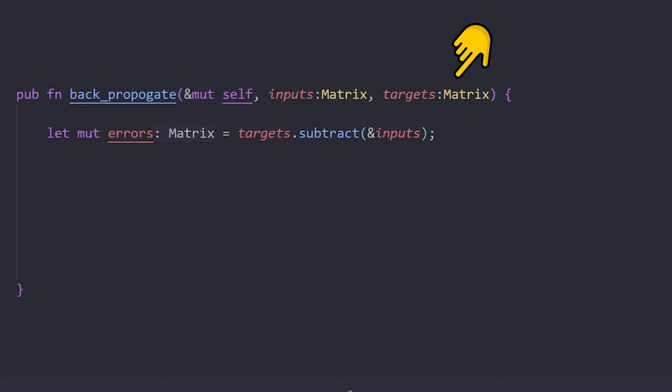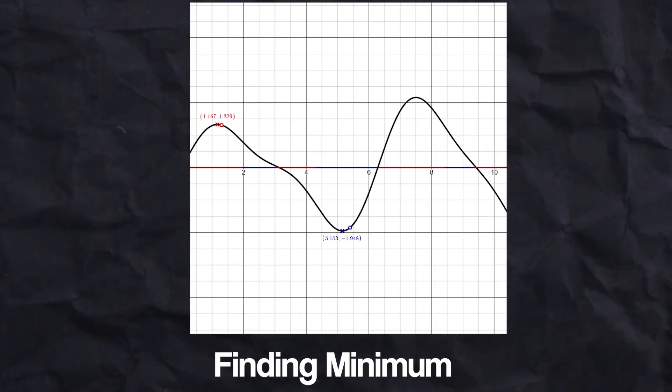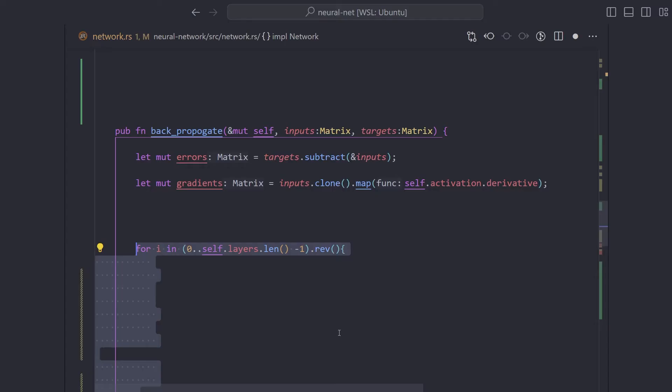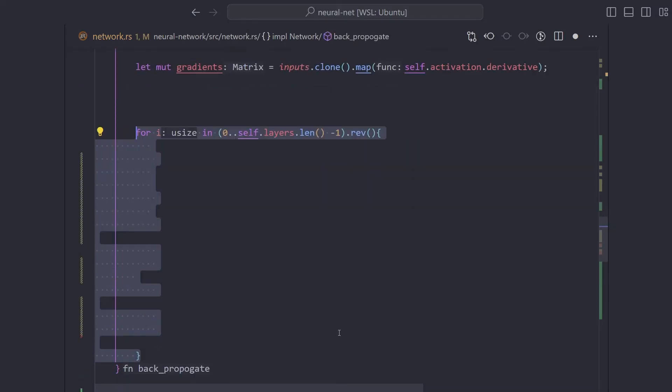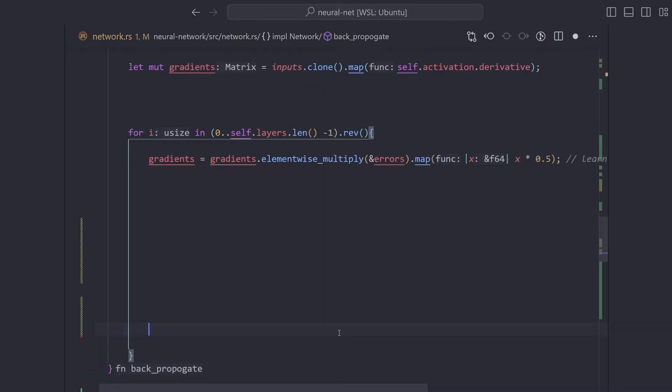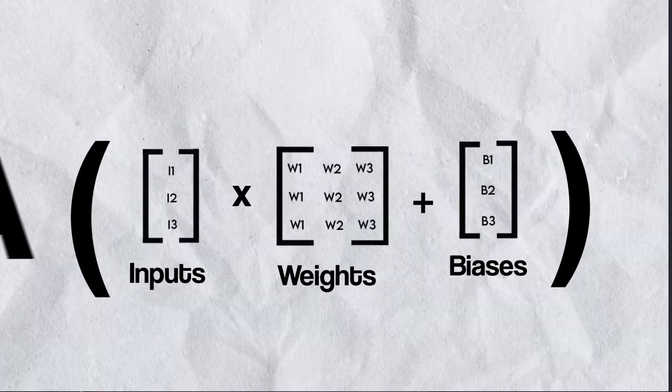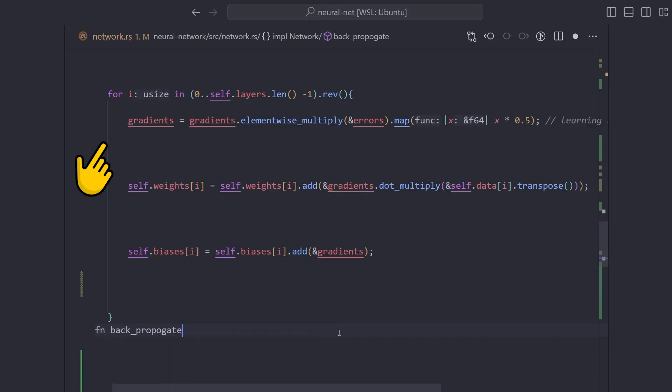Firstly, we calculate our cost, meaning how off our input was from the expected output. The whole point of our neural network learning is to minimize the cost function to as little as possible. Next, we search for which parts of our network were most responsible for producing this incorrect output. We iterate layer by layer, multiplying our activation function by its derivative to access the weights and biases. Then we will multiply them by our error to update our neurons proportionally. The higher the gradient, the more responsible that particular neuron is to producing the output.